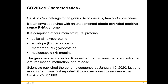Once inside our cells, that piece of RNA gets converted directly to protein — the virus takes over our cell machinery to produce proteins directly from its RNA. It's comprised of four main structural proteins. The genome also codes for 16 non-structural proteins that are involved in viral replication, maturation, and release.